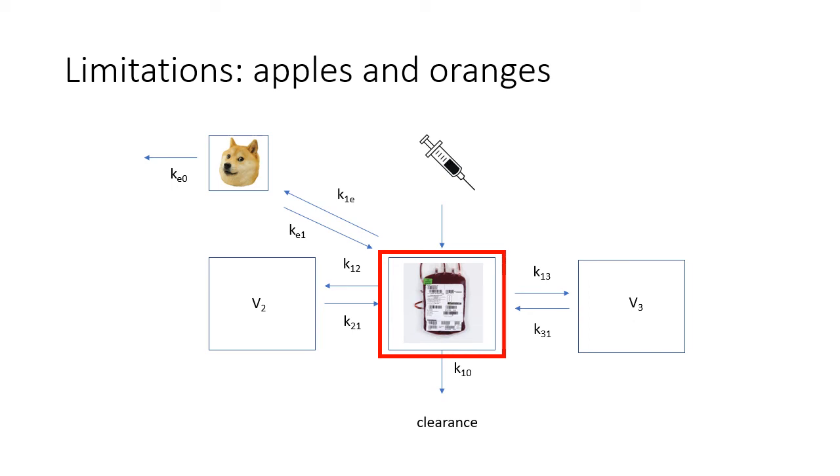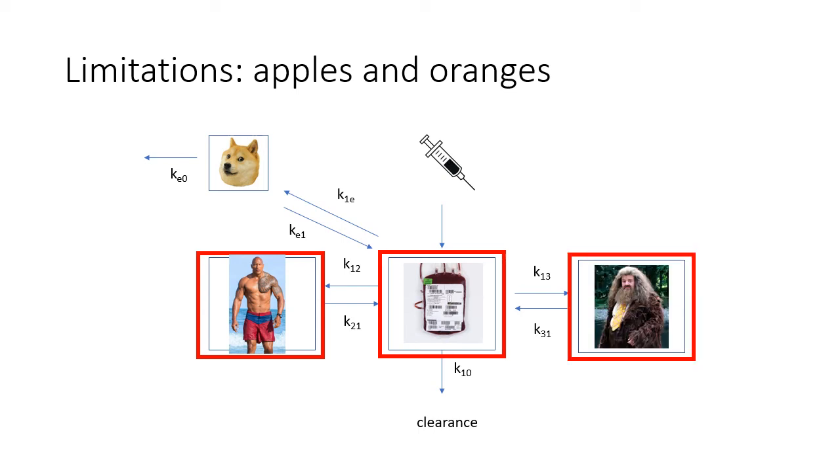As for the peripheral compartments, although the Schneider algorithm does estimate lean mass, the algorithm is unable to distinguish between Dwayne the Rock Johnson, who will have an enormous V2, and Hagrid, who will have a relatively larger V3, despite these two men being of similar weight and stature.